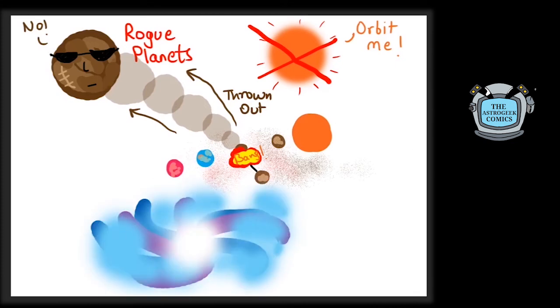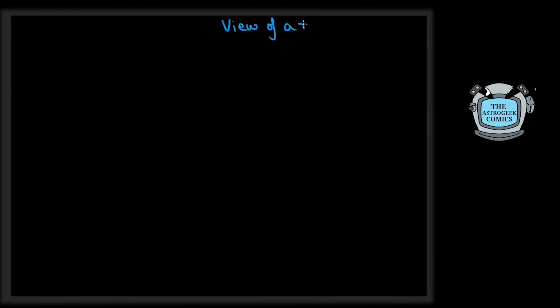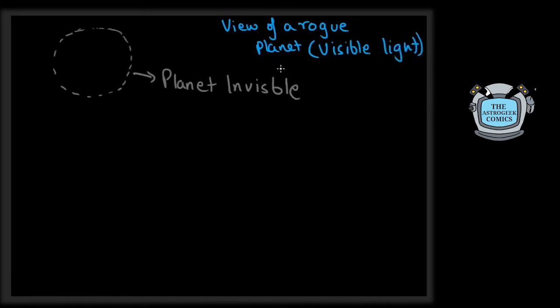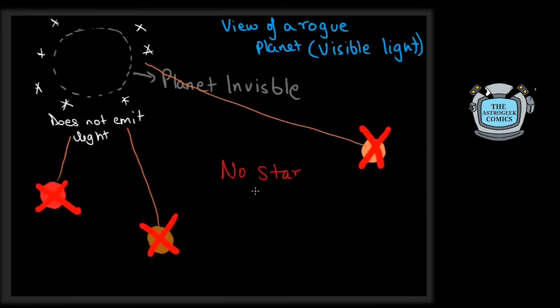These now orbit the center of the galaxies they are a part of. My favorite thing about these planets is that they would be completely invisible to your eyes if you were standing right in front of one, since planets do not emit any light and rogue planets have no stars around to reflect their light.